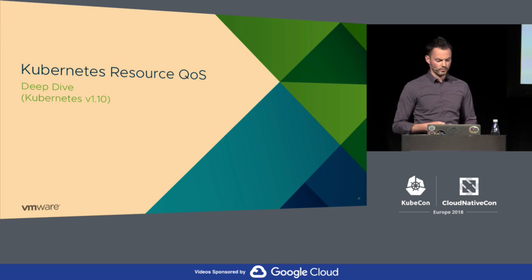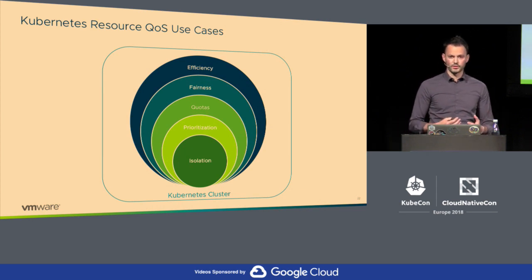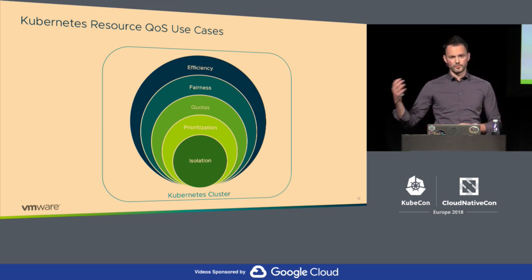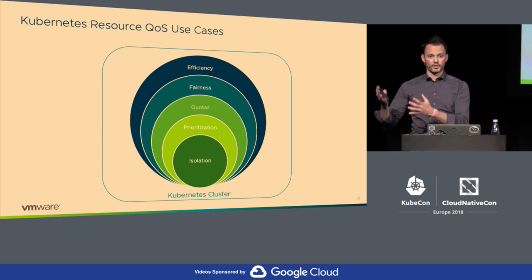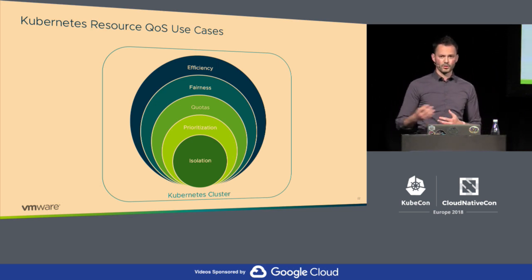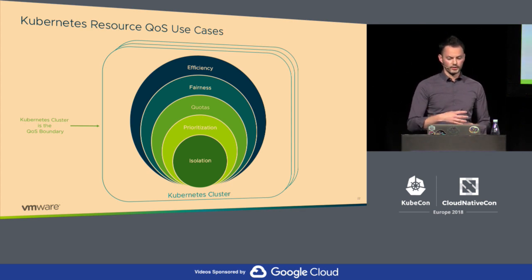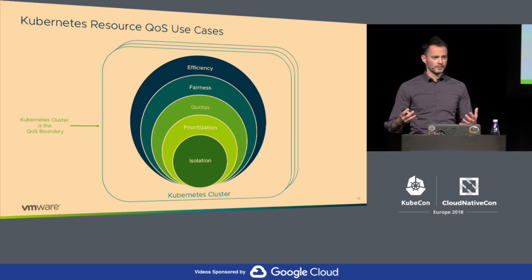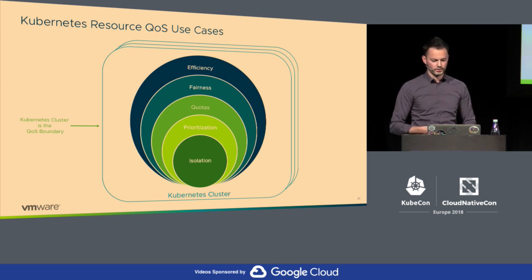In a Kubernetes cluster, what we typically want to achieve is isolation between tenants or different namespaces and teams, prioritization, quotas so a team cannot use more than say eight CPUs, fairness, and also efficiency — if one team is not using its resources, another can use the idle ones. There's a lot of things to achieve that may not always work nicely together. Keep in mind all the primitives we're covering are just at the cluster boundary — if you have multiple clusters, you have to think about resource management across cluster boundaries. On bare metal, be aware of creating silos by running multiple clusters since there's no global resource sharing between clusters yet.